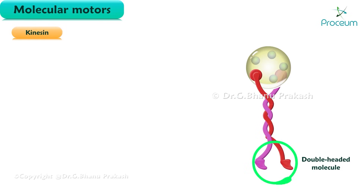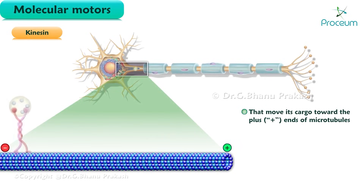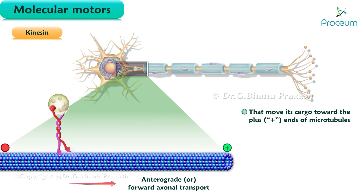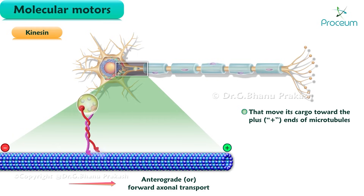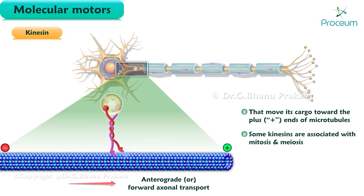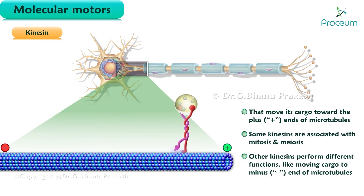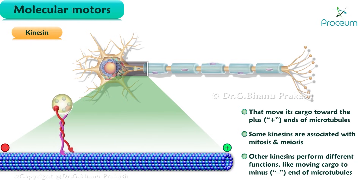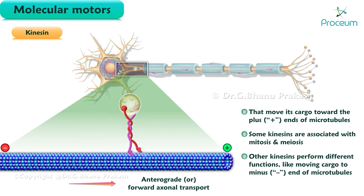Kinesin is a double-headed molecule that moves its cargo towards the plus ends of microtubules. One head binds to the microtubule and then bends its neck while the other head swings forward and binds, producing almost continuous movement. Some kinesins are associated with both mitosis and meiosis, while others move cargo to the minus end of microtubules. Kinesins are often involved in anterograde or forward axonal transport.